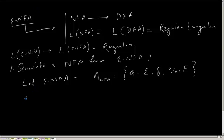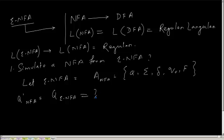The set of states of the new NFA — Q-dash NFA — is equal to Q of the epsilon-NFA. The new NFA will have the same set of states as the original epsilon-NFA. The number of states is not going to change because what I need is just to remove the empty transitions between states; I don't need to create any more states.